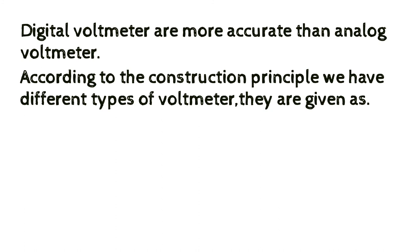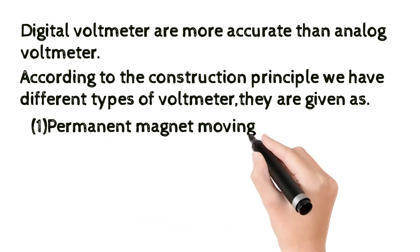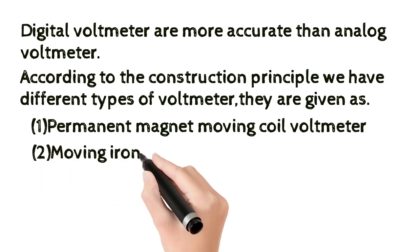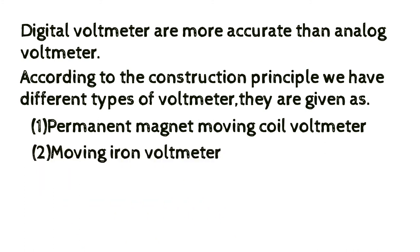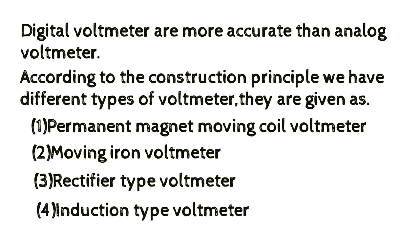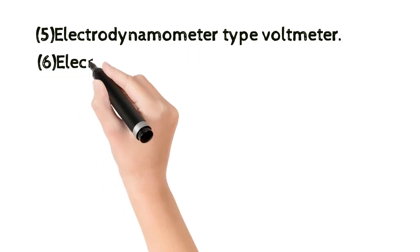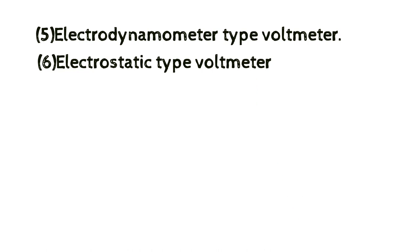According to the construction principle, we have different types of voltmeter. They are: permanent magnet moving coil voltmeter, moving iron voltmeter, rectifier type voltmeter, induction type voltmeter, electrodynamometer type voltmeter, and electrostatic type voltmeter.